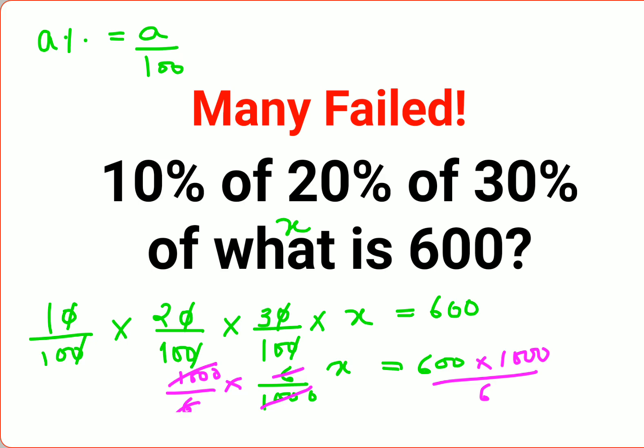So you're just left with X on your left-hand side equals - this is 100 times 1000 - that gets you 1 lakh, or we can say 100K. So this value of X is going to satisfy whatever they are saying.